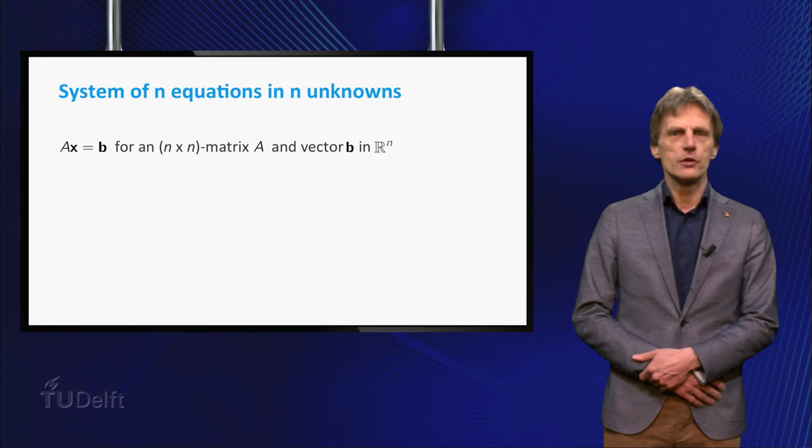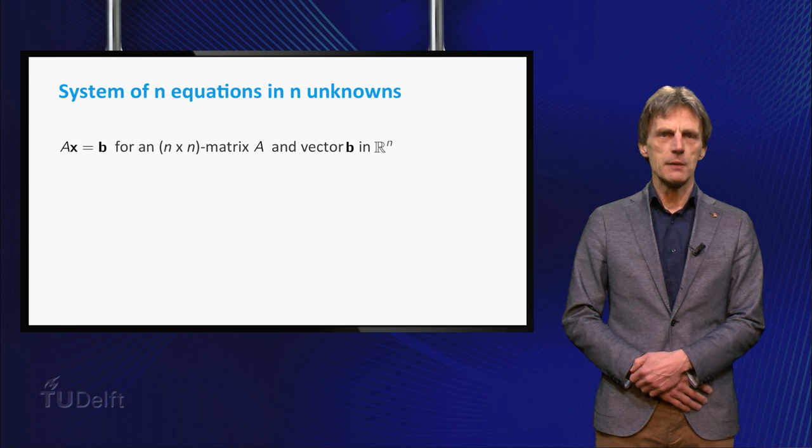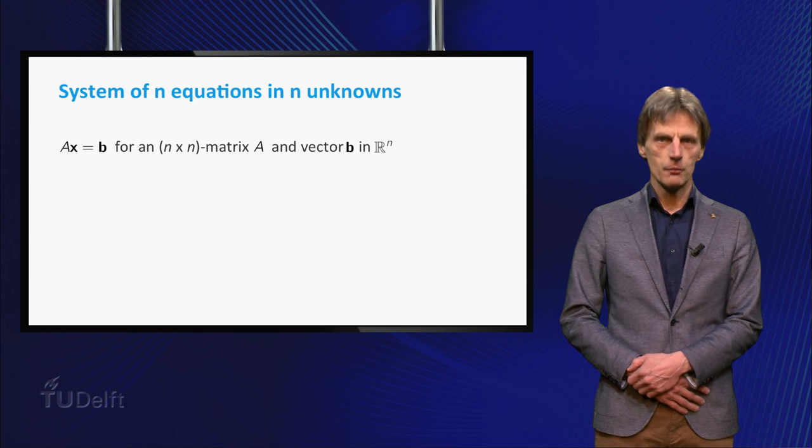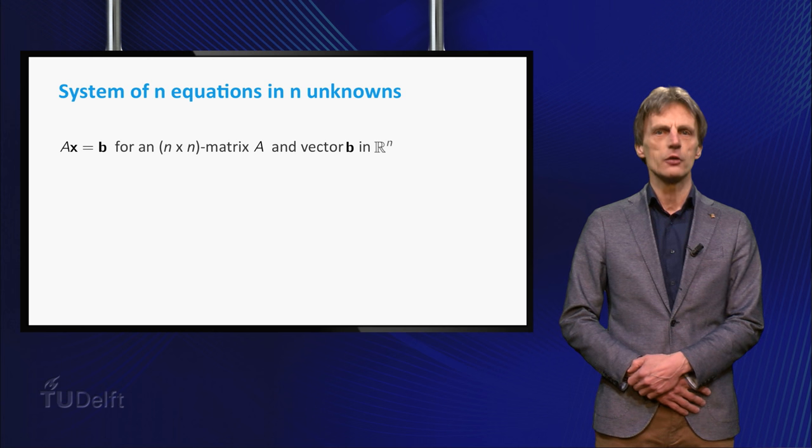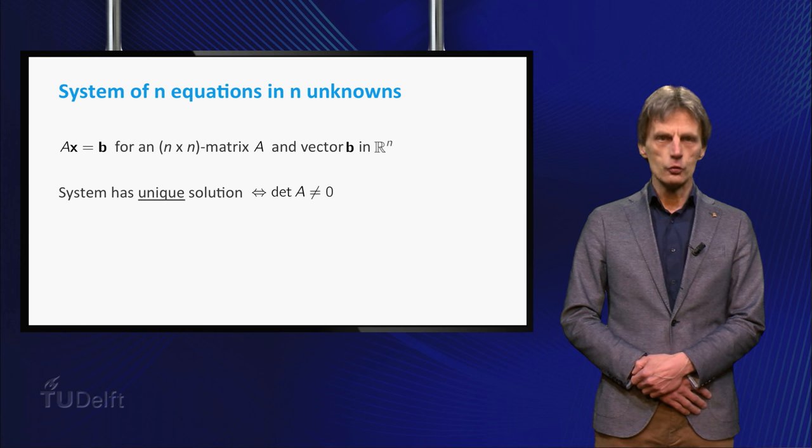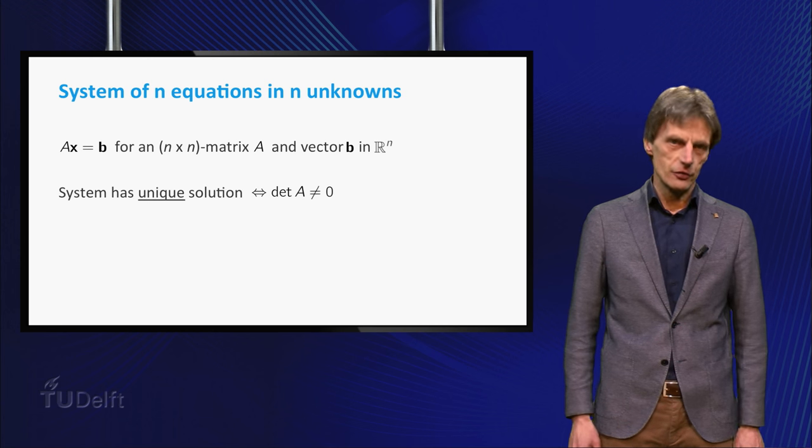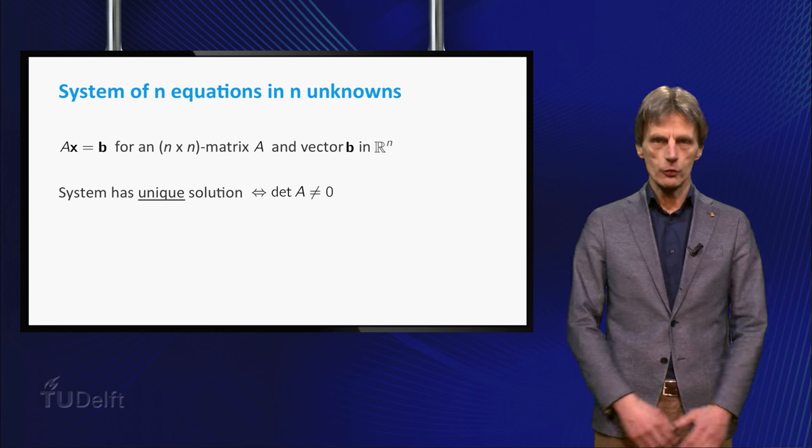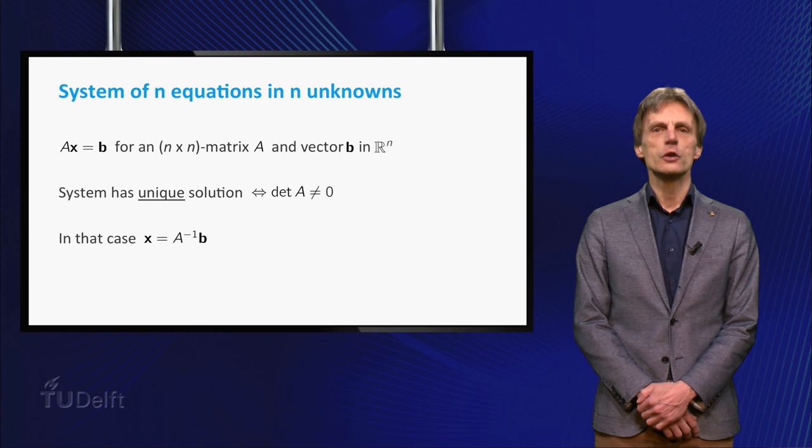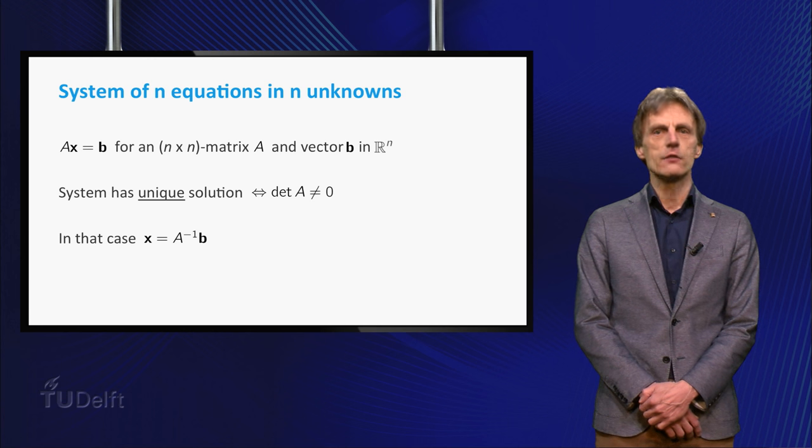Consider a system A times x is equal to b for some n by n matrix A and vector b in R^n. That is, a system of n linear equations in n variables. You know that the system has a unique solution if and only if the determinant of A is unequal to zero.